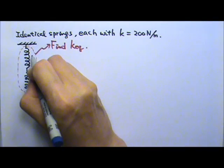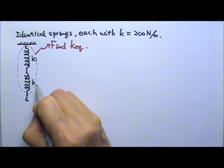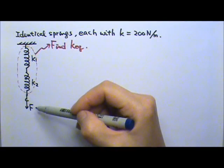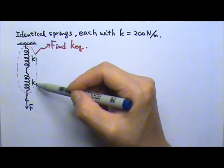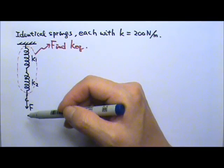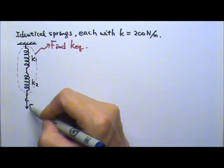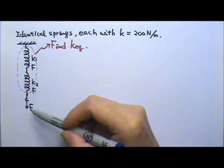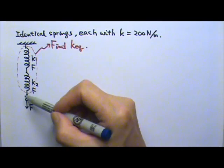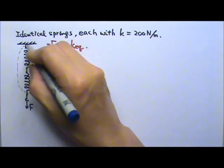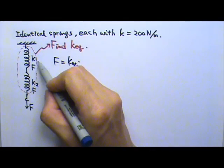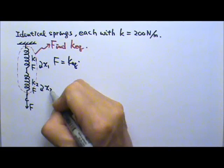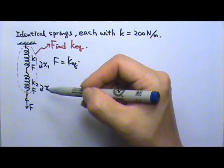Let's say the first spring has spring constant K1 and the second has spring constant K2. I'm pulling with force F. Because the springs are connected in series and are massless, the tension is the same throughout. This means the force in each spring equals F. Writing F equals Kx for the combination: F equals K equivalent times (x1 plus x2), where x1 is the stretch of the first spring and x2 is the stretch of the second spring.